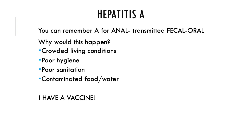Looking at hepatitis A, one way you can remember this is A for anal — it's transmitted via the fecal-oral route. This happens when people are living in crowded conditions, have poor hygiene or poor sanitation, or there's contaminated food or water. This happens a lot in areas without clean water. The good news is there is a vaccine for hepatitis A.